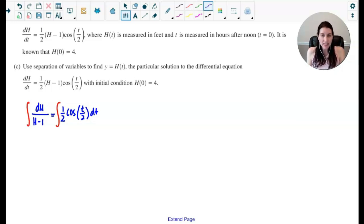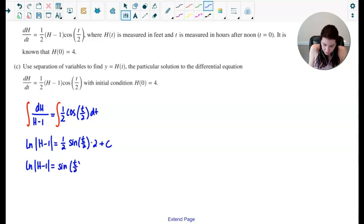The integral of dh over (h - 1) is going to be the natural log of the absolute value of (h - 1), and the integral of 1/2 cosine(t/2) is going to be 1/2 times sine(t/2), and then I'd have to divide by 1/2 or multiply by 2, and then don't forget that plus c. Now we can go ahead and just add the plus c to one side, just don't forget it. With some simplifying I can see that the natural log of the absolute value of (h - 1) is sine(t/2) plus c, because the 1/2 and that times 2 would cancel each other out.